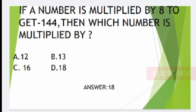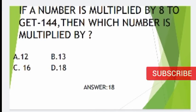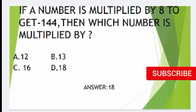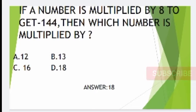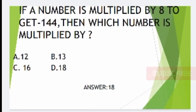Third question: If a number is multiplied by a certain value to get 144, which number is multiplied to get 144? You need to multiply to get 144. The answer is Option D, 80.